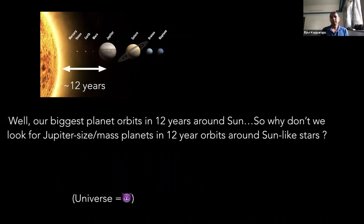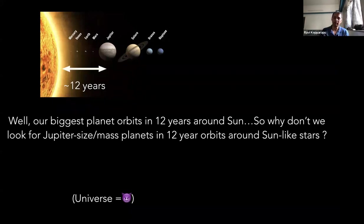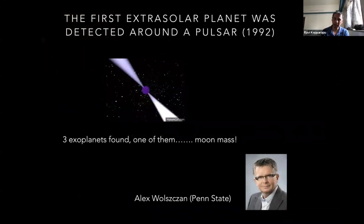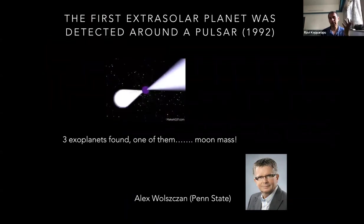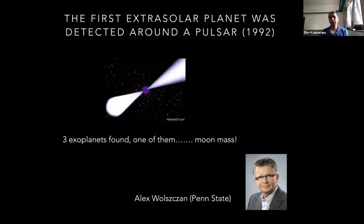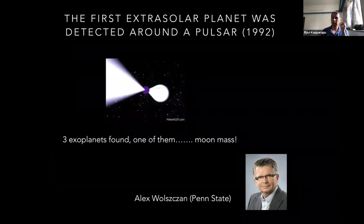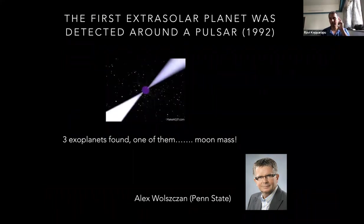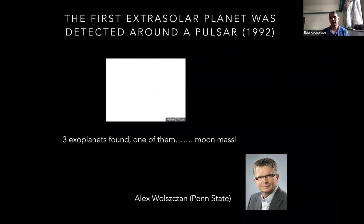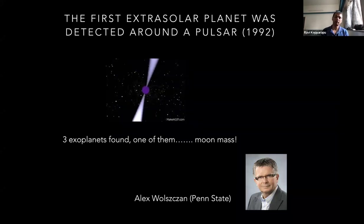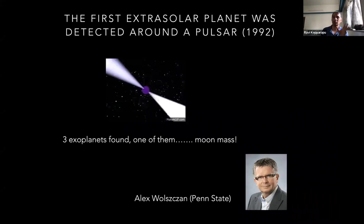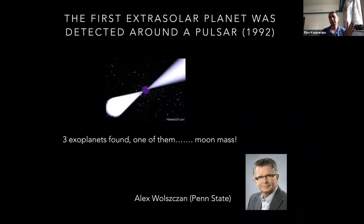So the universe had a different idea — the universe is very clever and doesn't care about our expectations. It gives what it gives, and it is our need to find what the universe is giving us. What happened was that the first extrasolar planet was actually detected around a pulsar — a neutron star, a dead rotating neutron star. Alex Wolszczan from Penn State was the one who first found the first confirmed extrasolar planets around another star — not just a sun-like star, but around any kind of star.